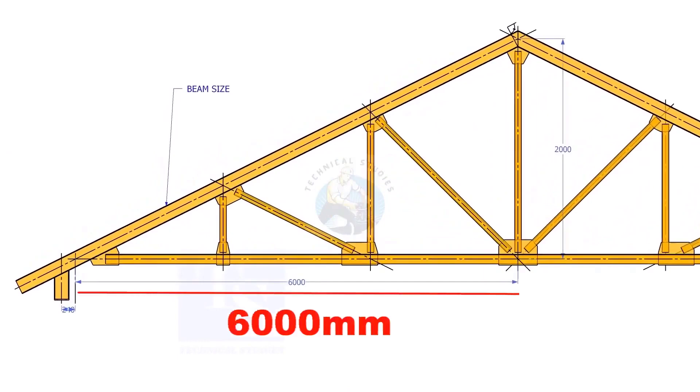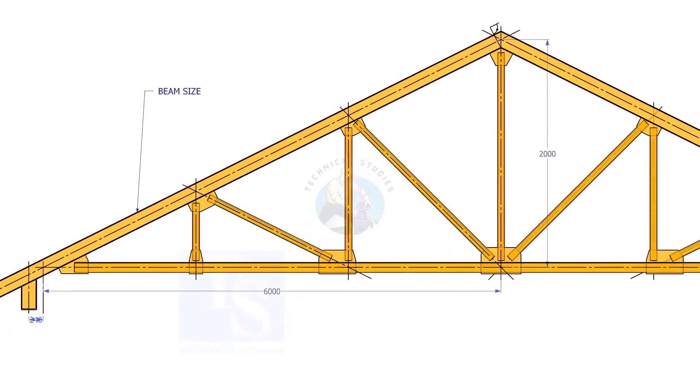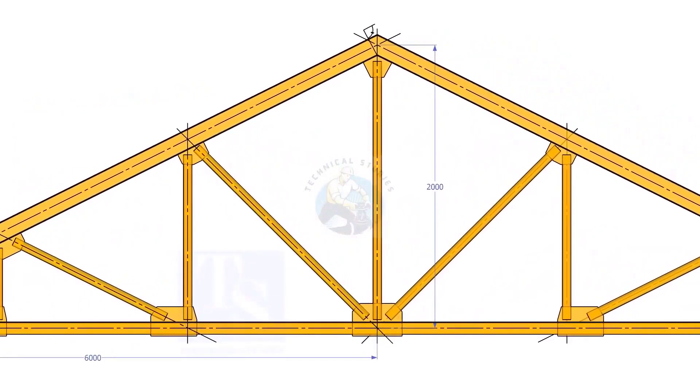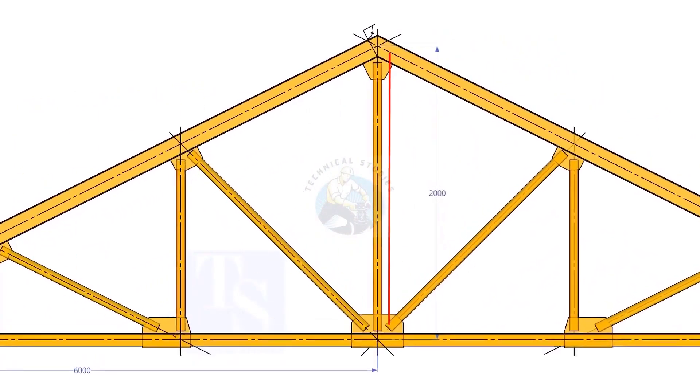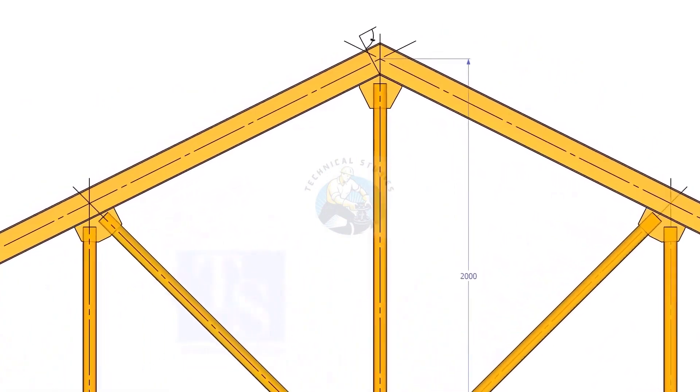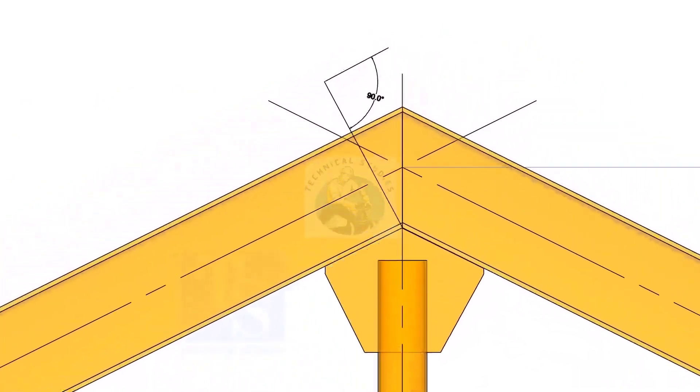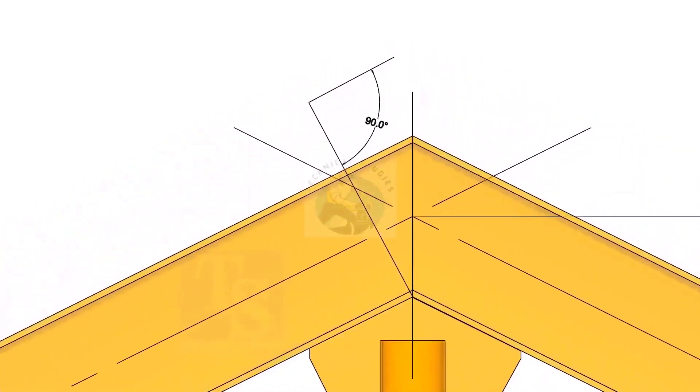Assume that the half span of a truss is 6000mm and the height of the truss is 2000mm. How to calculate the cutback of a 400mm wide girder?